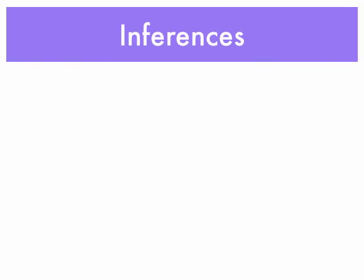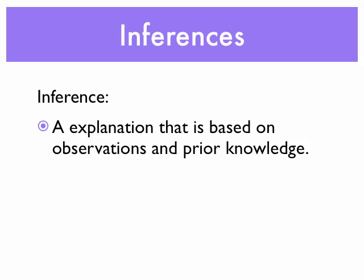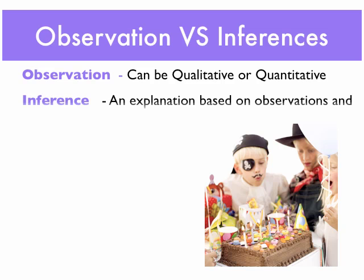After we make our observations, we can use those to draw inferences. An inference is going to be an explanation based upon our observation and what we already know — our prior knowledge about something. So let's talk a little bit about observation versus inference. We know that an observation can be qualitative or quantitative, and we know that we can use our observations to make inferences — to come up with explanations about what we are observing, using our prior knowledge to help us make those explanations.